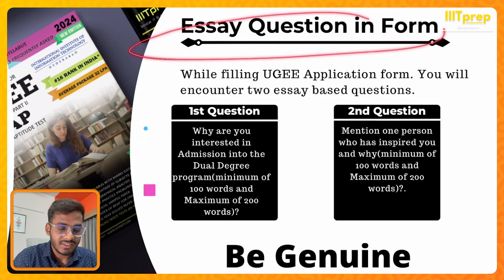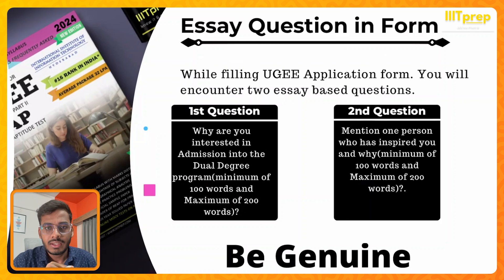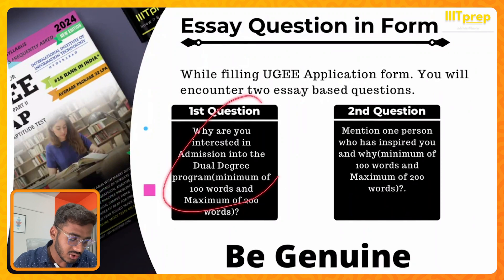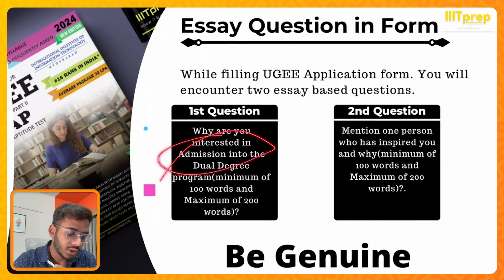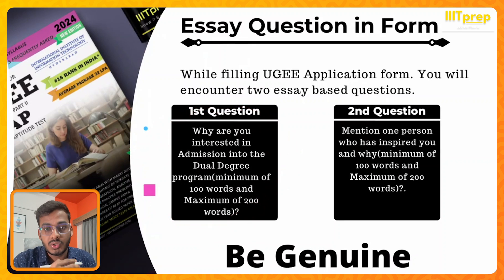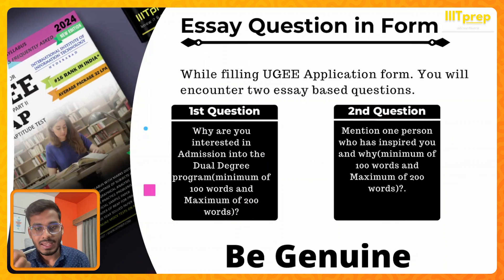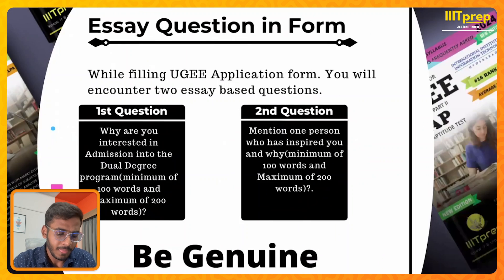In the form there are subjective questions. There are two subjective questions. The first question is: why are you interested in the automation dual degree program? As you know, the UGEE program is a BTech plus MS, so they want a reason why you want to join this program when other alternatives like a BTech program at IIT Hyderabad also exist. The second question is: mention one person who has inspired you and why.